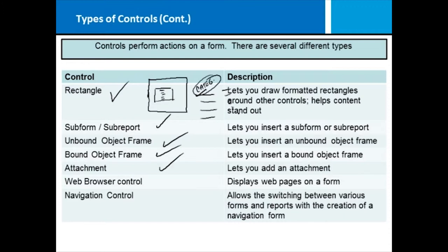We have an attachment which means you can add an attachment—for example, a Word document or an Excel spreadsheet that's part of that record. We have a web browser control so you can actually display a web page on a form. And we have navigation controls which allow you to switch between different forms and reports with the creation of what we call a navigation form.